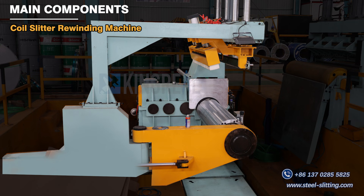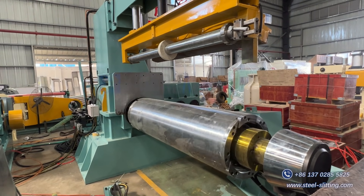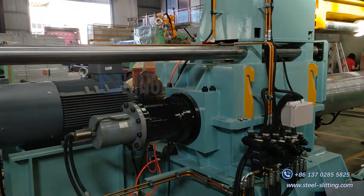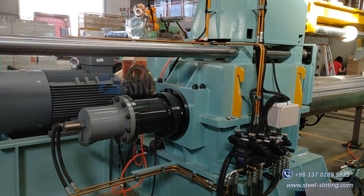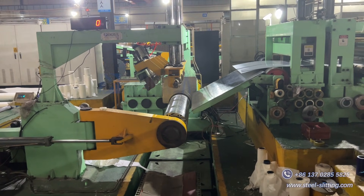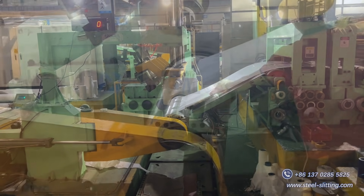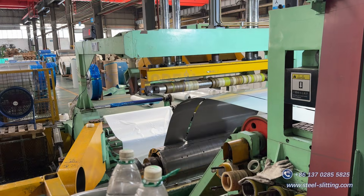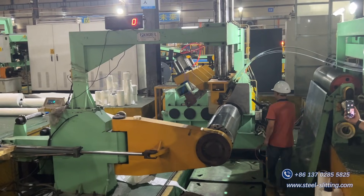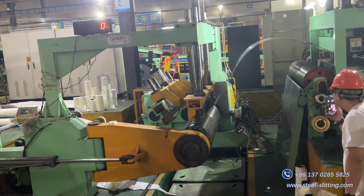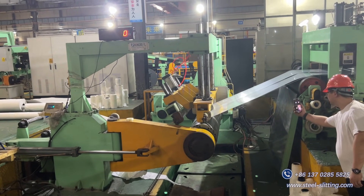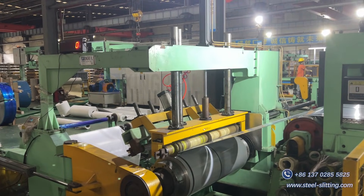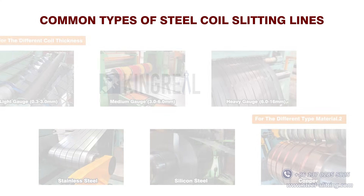Coil Slitter Rewinding Machine. In a steel coil slitting line, the take-up unit is used to re-roll the slit narrow steel strip into smaller rolls for subsequent storage, transportation and processing. The winder is one of the core components of the coil slitting line.